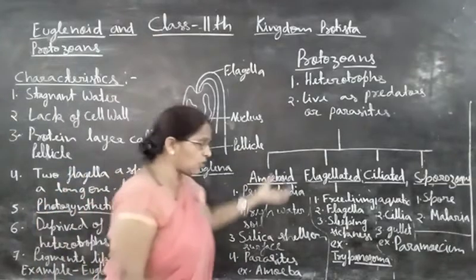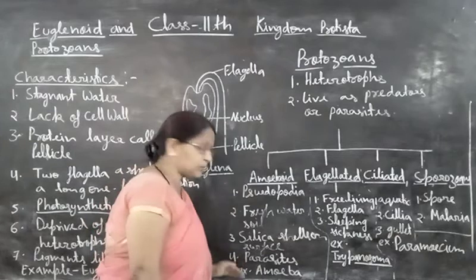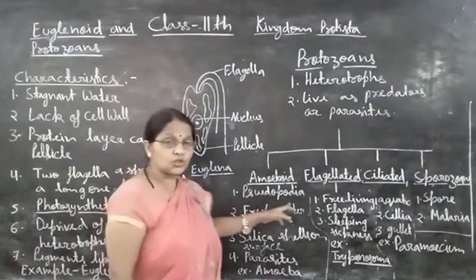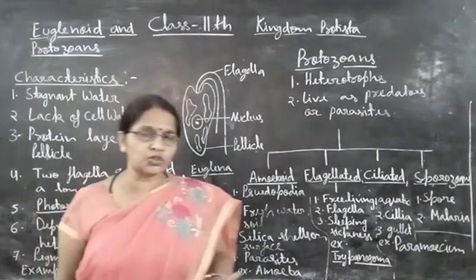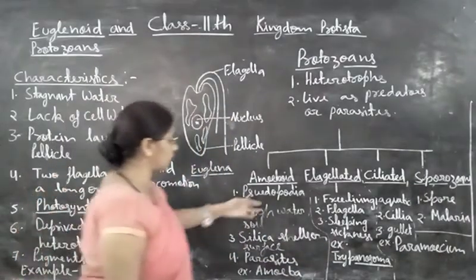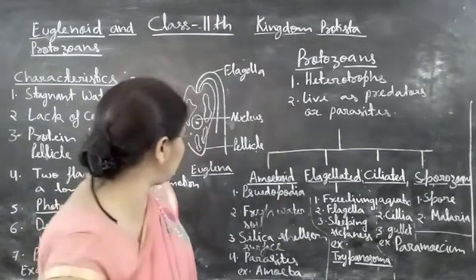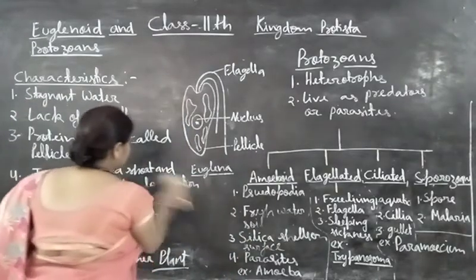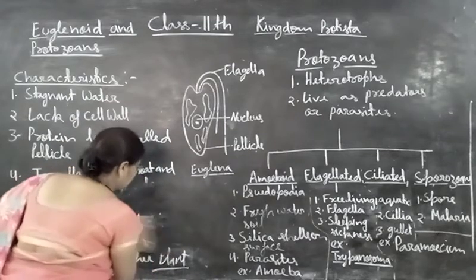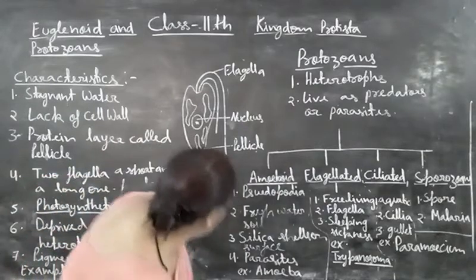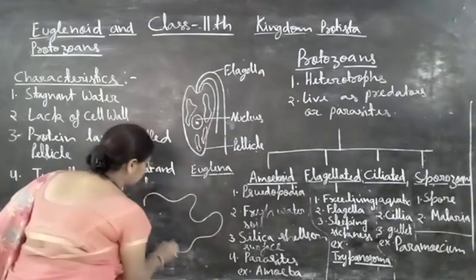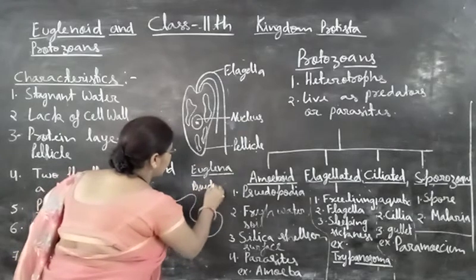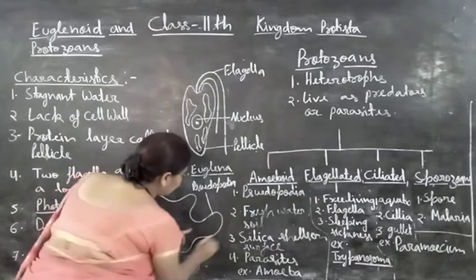First, amoeboid. The organisms placed in amoeboid have the following characteristics. First is pseudopodia — it is a special structure for locomotion which is formed in their body. A finger-like projection is formed. For example, amoeba. In amoeboid, pseudopodia are present — it is the finger-like projection formed in their body.